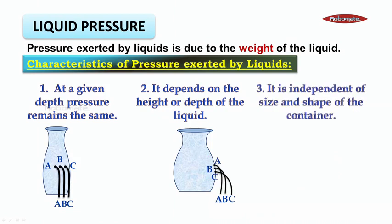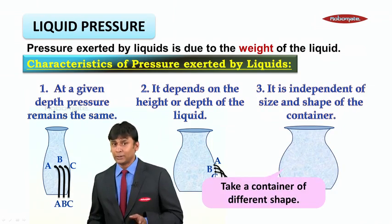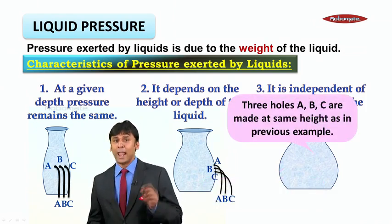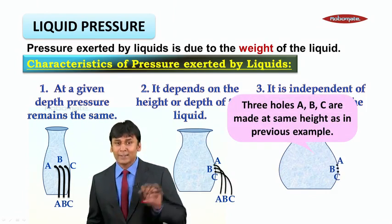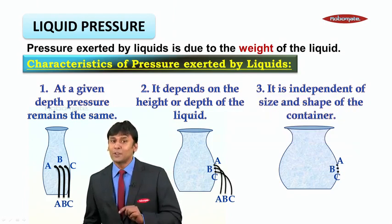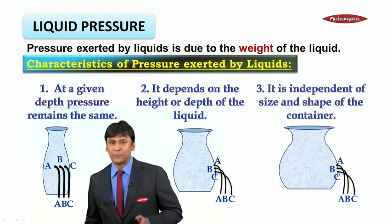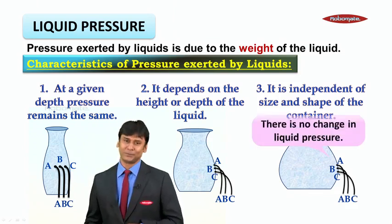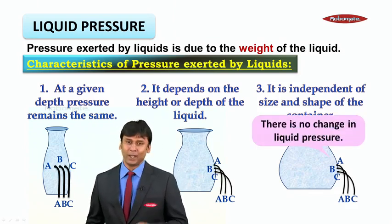The third characteristic is that liquid pressure is independent of the size and shape of the container. So I take a container of a different shape and make holes at the same height as in the previous example. As the height of the holes is the same, the pressure of the fluid is also the same. Hence, fluid pressure is independent of the size and shape of the container, and there is no change in liquid pressure at these three points.